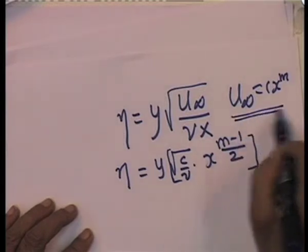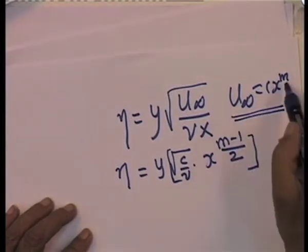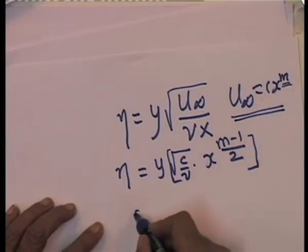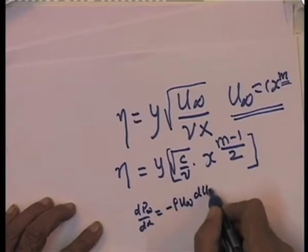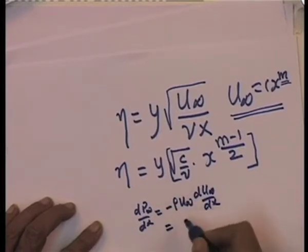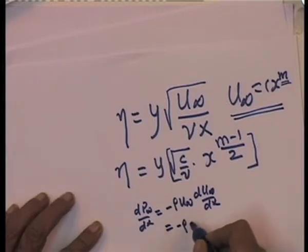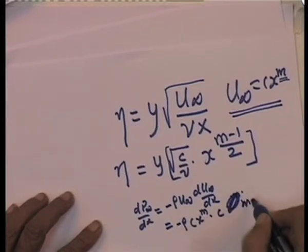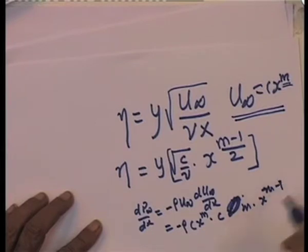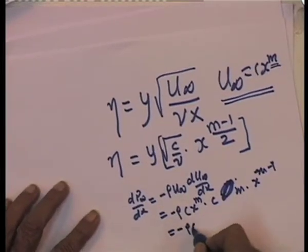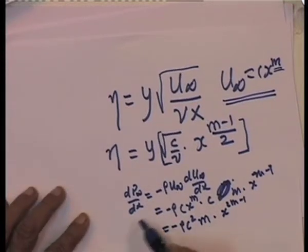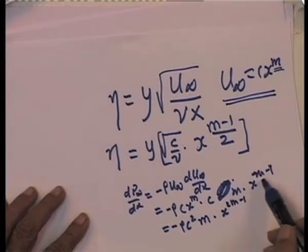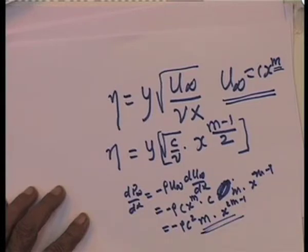Similarity solutions are possible only when u∞ varies in this fashion. We say m is a pressure gradient parameter because dP∞/dx = −ρ u∞ du∞/dx, which equals −ρ c² × x^(2m) × x^(2m−1). Therefore the pressure gradient is totally determined by whether m is positive or negative, and that is why we call m the pressure gradient parameter.